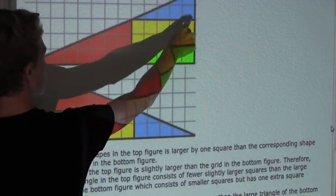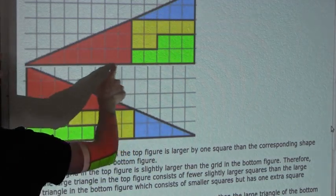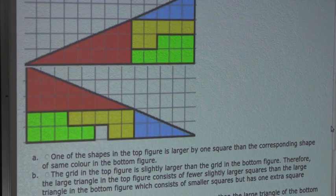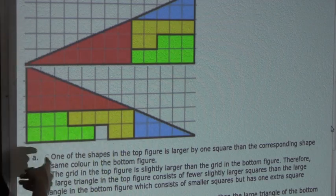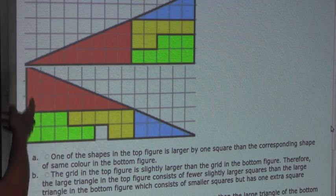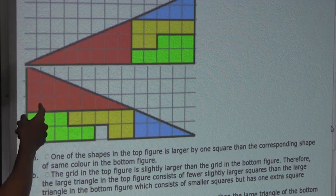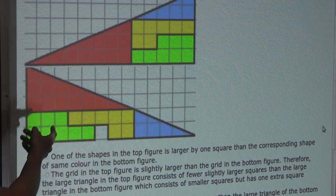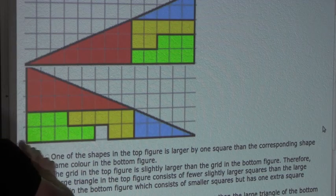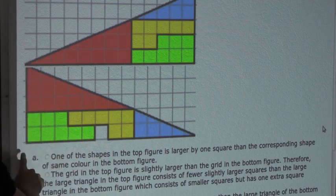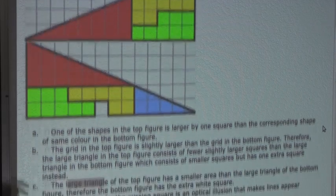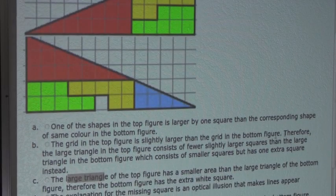The top figure also has height 5 squares and base 13 squares. So both figures have the same area: base times height divided by 2, which is 5 times 13 divided by 2 for both. Even if the grid spacing were different, we are measuring by squares, not centimeters or inches. Therefore option B is not a possible solution.